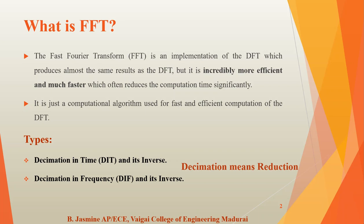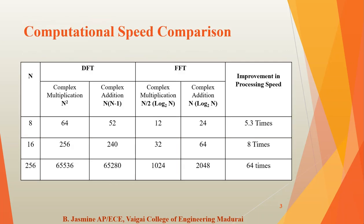The FFT gives incredibly more efficient and much faster DFT results. This is the comparison of computational speed of DFT versus FFT. If the number of samples is 8, complex multiplications for DFT is N² = 64. For FFT, only 12 complex multiplications are needed using the formula N/2 · log₂(N). Comparing DFT and FFT complex multiplications, it gives 5.3 times improvement in processing speed.